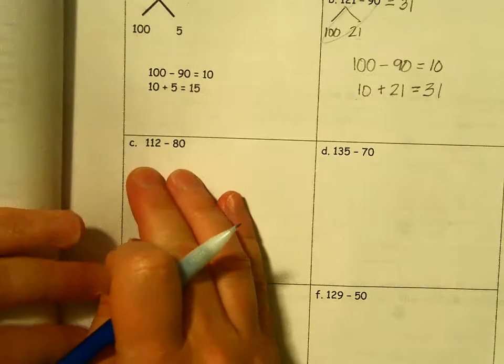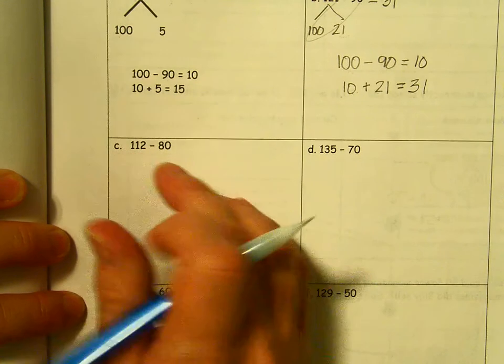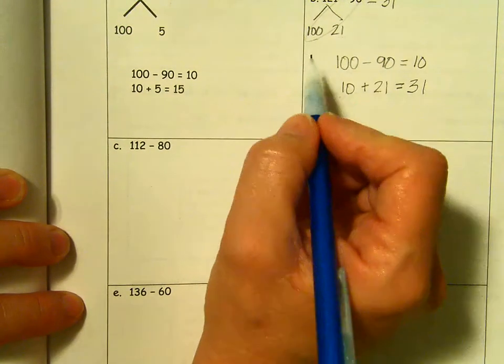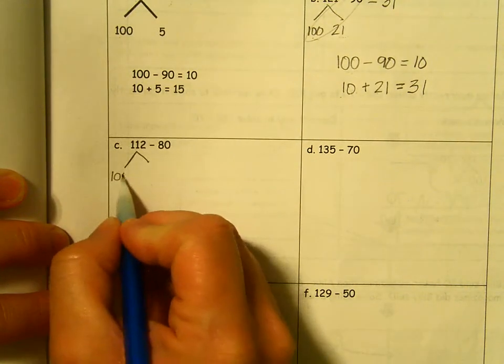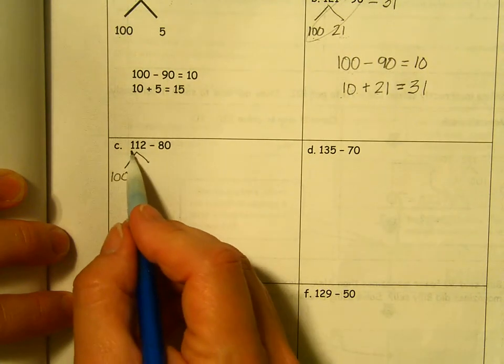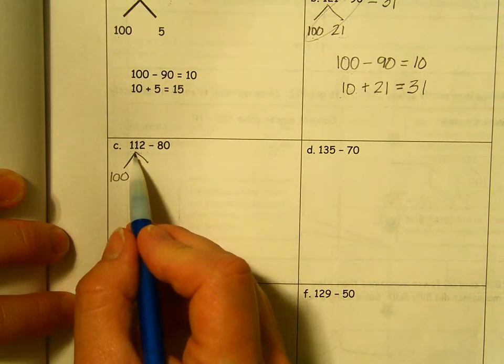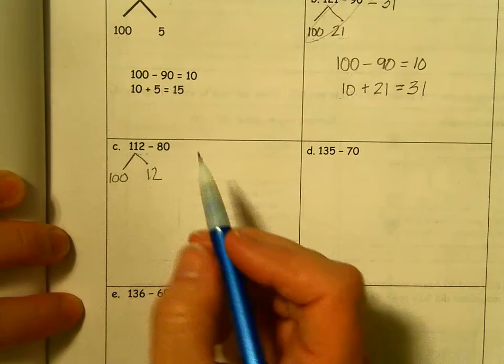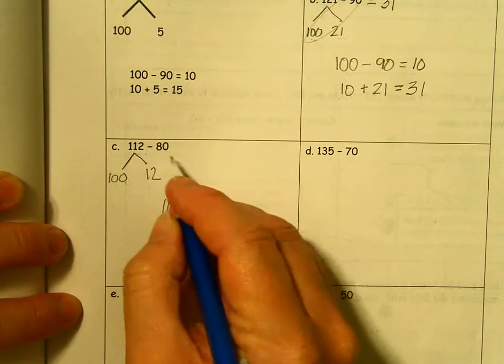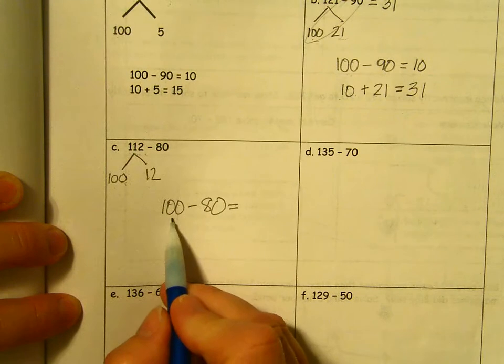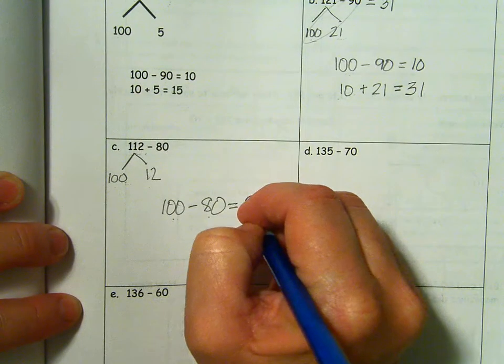Same thing here. We have 112 minus 80. So we are going to decompose our 100. We want to take out 100 because then it's super easy to subtract 10 tens. So if I am decomposing 112, I'm taking 100. What is left? If I have 110 and 2 ones, if I have 100, I have 10 and 2 left. So we are going to subtract from 100. 100 minus 80. 10 tens minus 8 tens. 2 tens or 20.